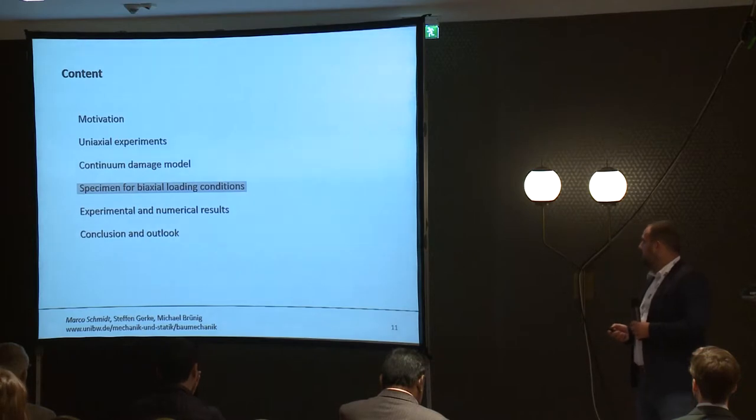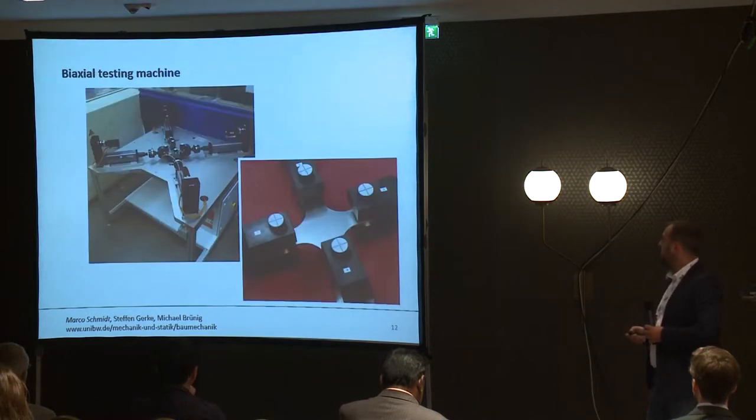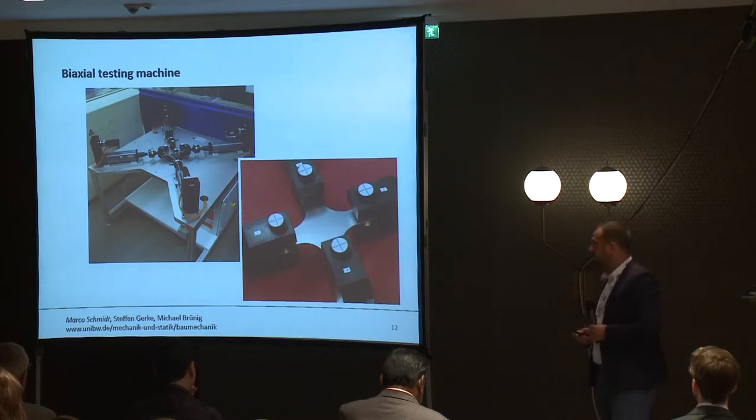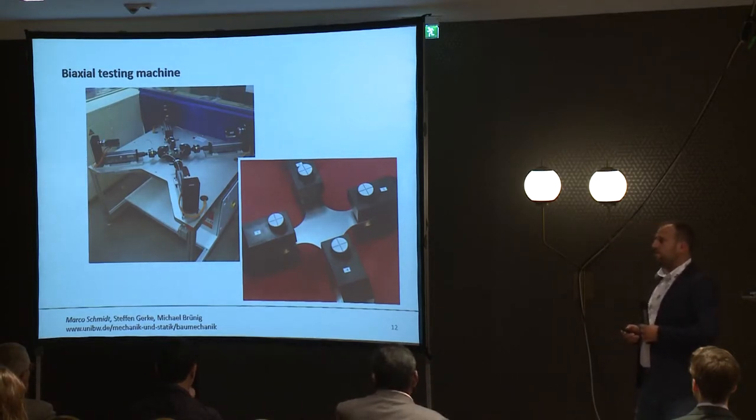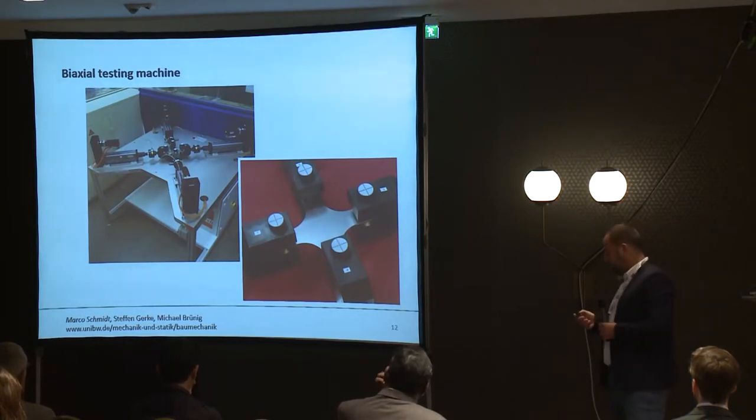Now, I want to explain the biaxial experiments. Here is our biaxial testing machine, which consists of four separately electro-mechanically controlled testing cylinders. The specimens are fixed in the center of the machine, as you can see here. And for the evaluation, we use the digital image correlation system, which was above the specimen on the table.